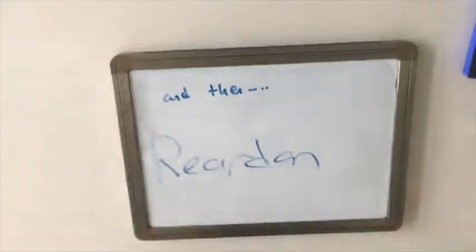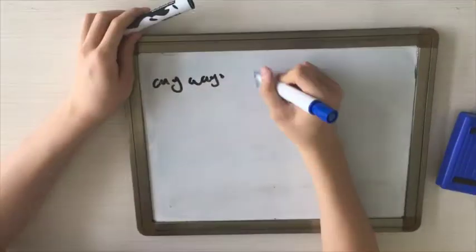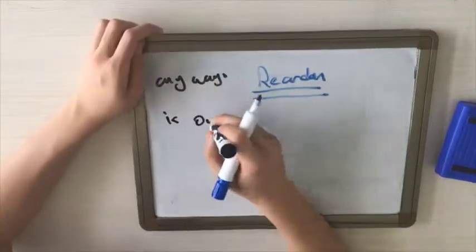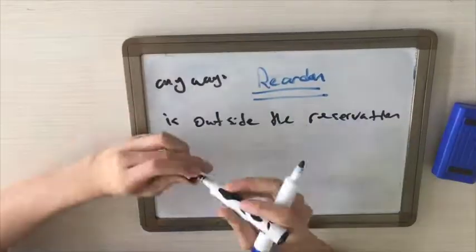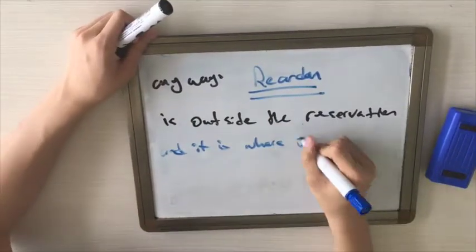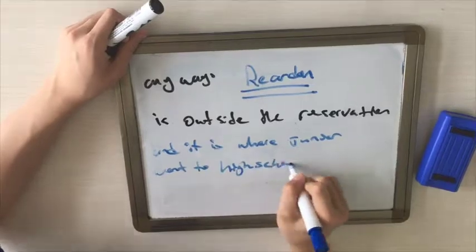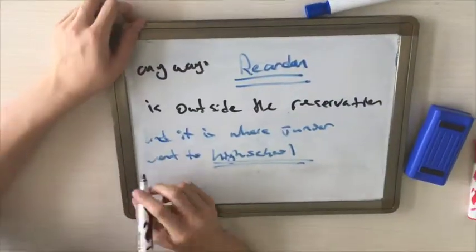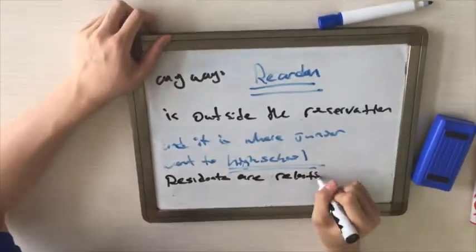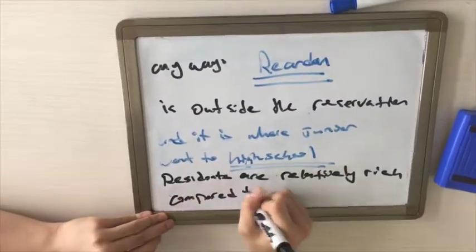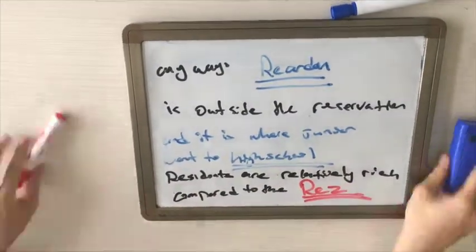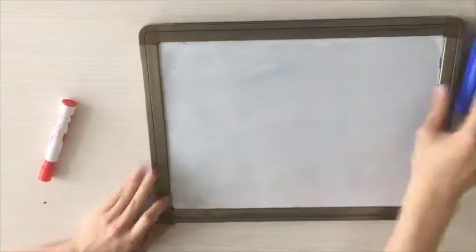Reardon is the other place that Junior goes to. It has more white kids who are better off than most of the kids in the reservation. To be honest, I think that Junior much rather goes to Reardon because of the opportunities that he gets.